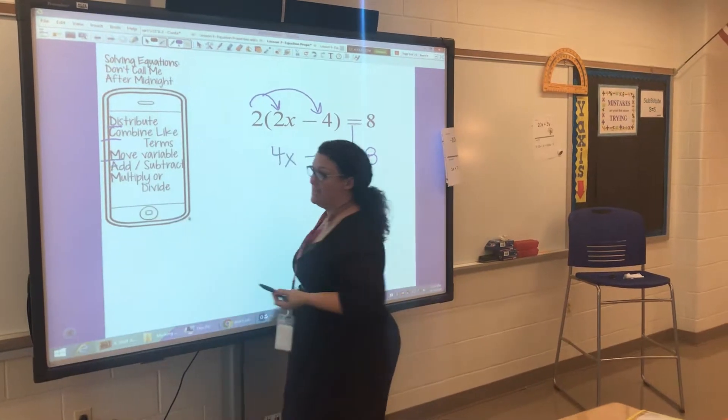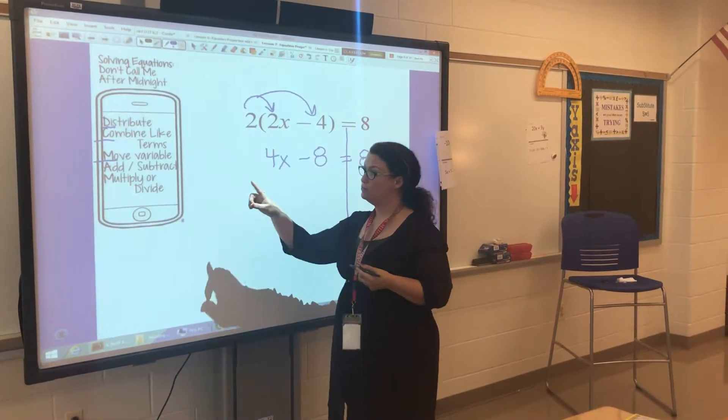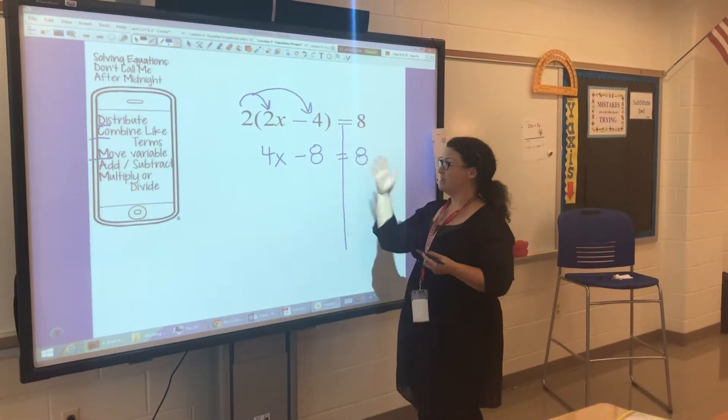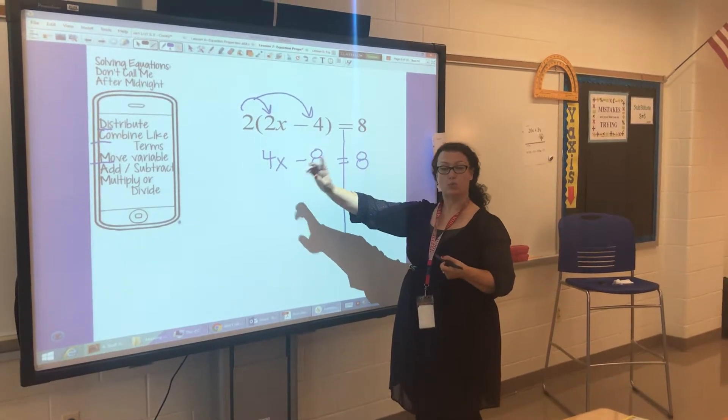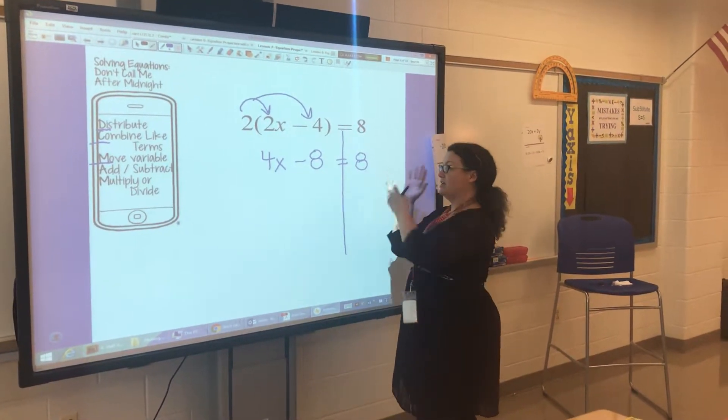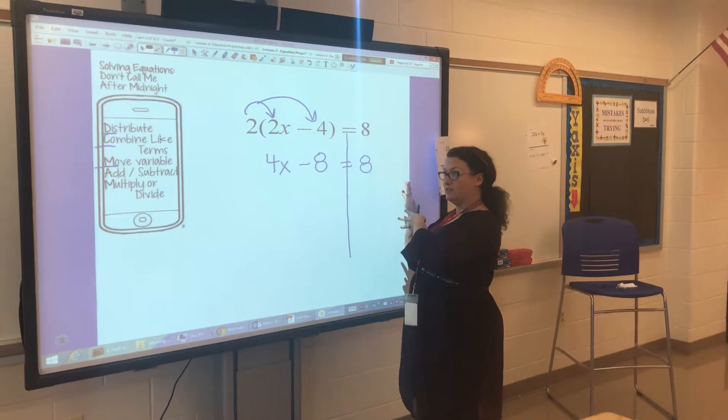The next step, M, starts with M and stands for move variables to one side. In this problem, there's only an x on one side, so we don't have to move it. If we had an x over here, we would have to do that next.